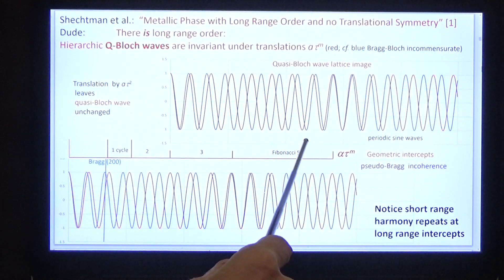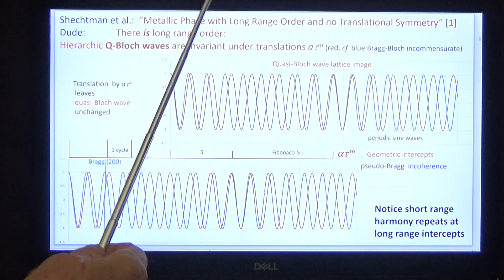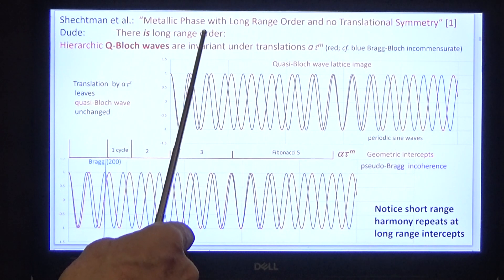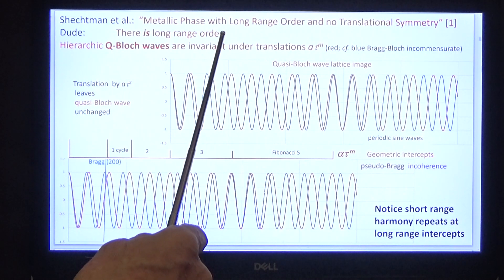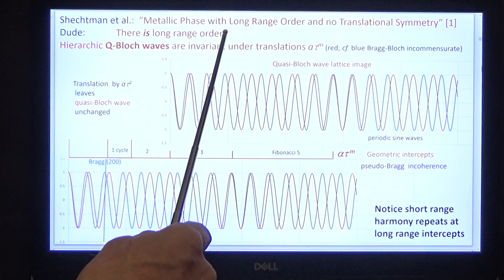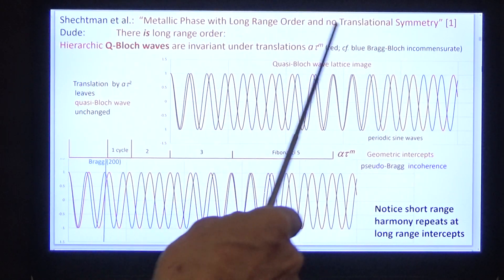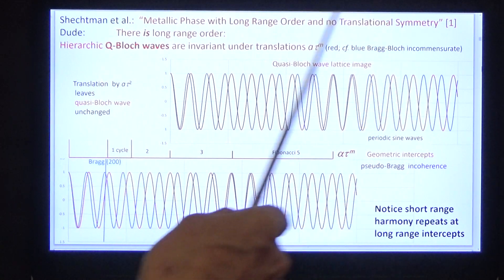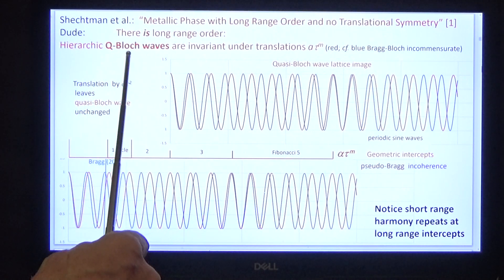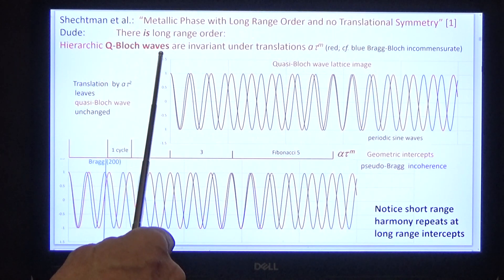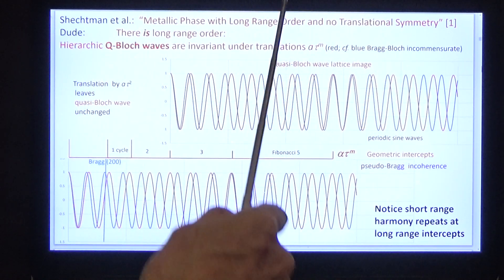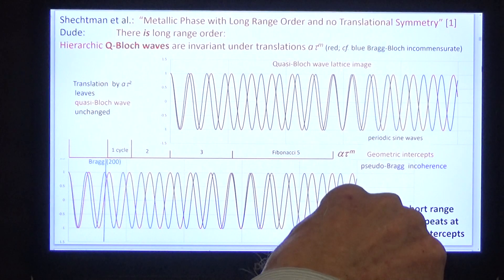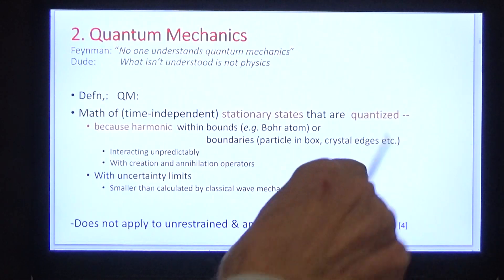So let us sum up. Is there long-range order? Yes, of course — that's evident in the diffraction. And is there no translational symmetry? On the contrary, hierarchic quasi-Bragg waves are invariant under all translations at all tau powers.